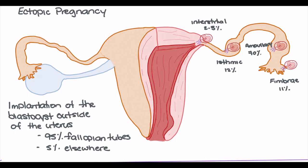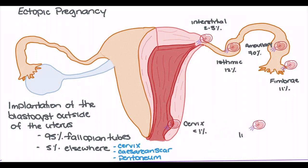Around 5% of ectopic pregnancies are not going to implant in the fallopian tubes and instead implant elsewhere. These locations include the cervix, previous cesarean section scars, or potentially the abdominal or peritoneal space. These types are considered rare, with cervical implantation occurring in less than 1% of all ectopic pregnancies, and ligamentous, peritoneal, or abdominal implantation also occurring in less than 1%.